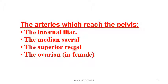It ends by anastomosing with the middle rectal and the inferior rectal arteries, which are not of the blood supply of the gut but supply the muscular coat of the rectum and the anal canal. This is a site of portosystemic anastomosis when it comes to their veins.